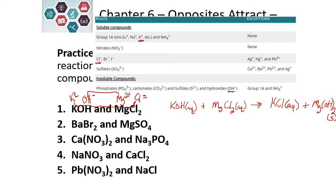We now need to balance the chemical reaction. We have one magnesium on each side — balanced. For chloride, there are two on the left and only one on the right, so we put a 2 in front of KCl. That changes the amount of potassium: two on the right, so we need two potassium on the left, putting a 2 in front of KOH. The coefficient 2 in front of KOH also gives two hydroxides on the left, and two hydroxides are on the right. Our reaction is balanced.